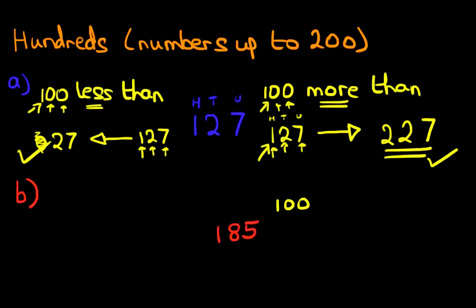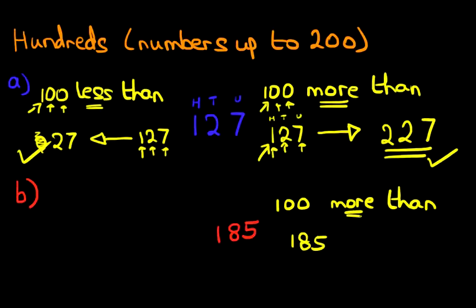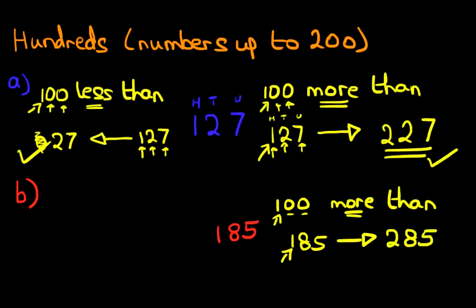What is 100 more than 185? Well the number is 185. Are we going forwards or backwards? It's more than, so we're going forwards. The only digit that's going to change is the first one, because the other two are going to go forward by zero. So going forward, the one is going to go up by one. So 185 becomes 285.